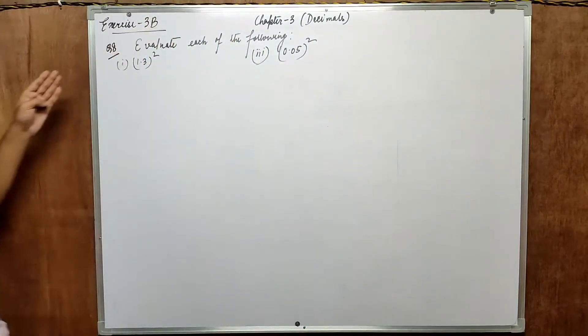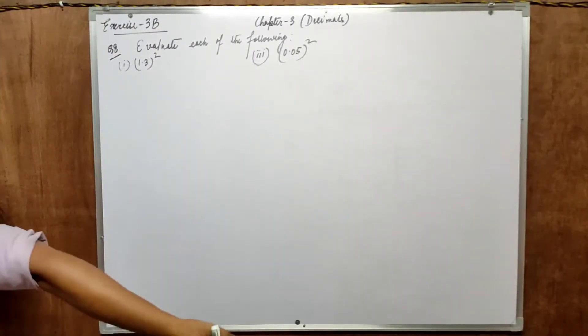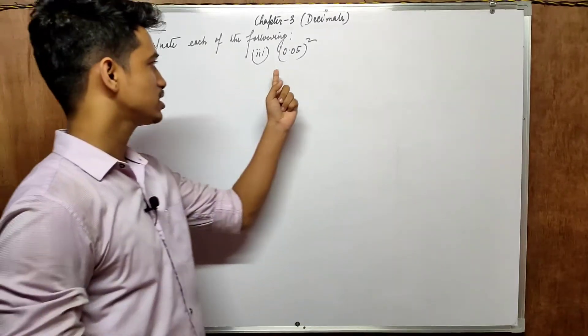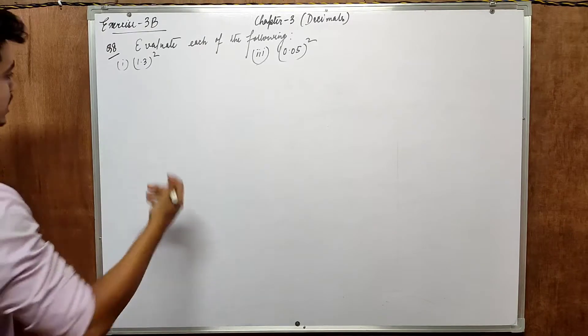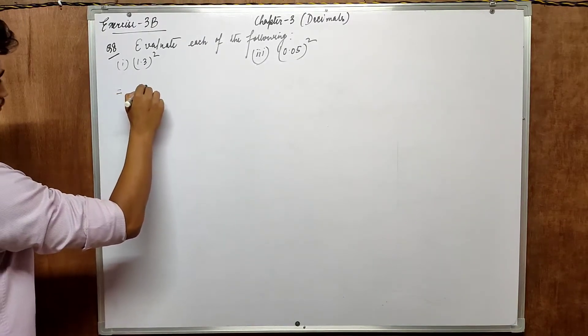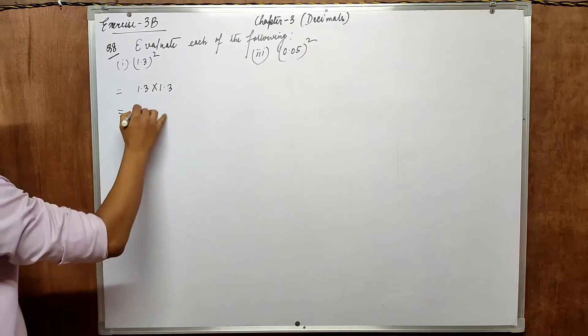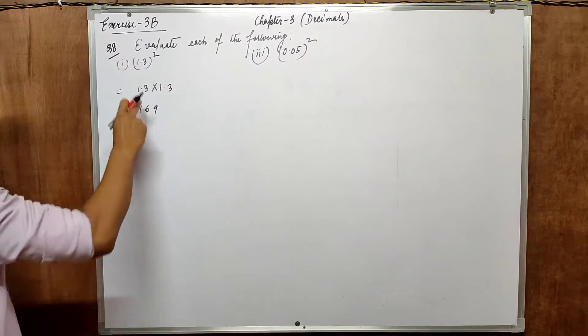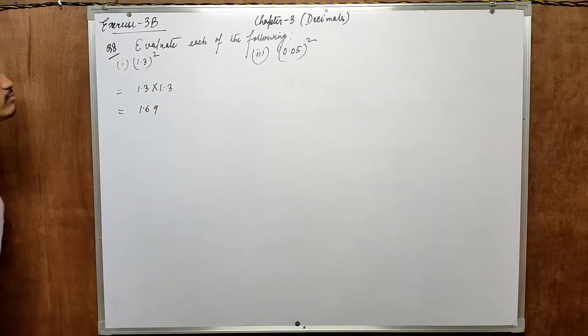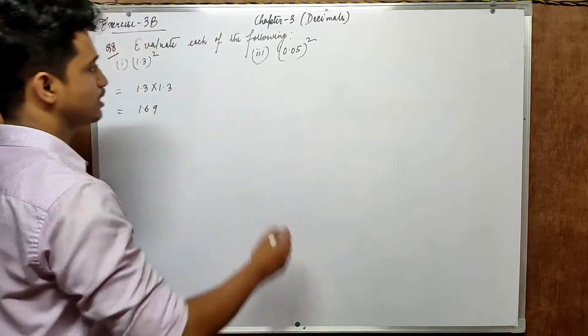Alright, let's start our journey by looking at question number 8. Evaluate each of the following. What is the first question? That is 1.3 whole square. Square means the repetition of number twice. So we know 13 into 13 is 169. And what is the process? After point, how many digits are there? 1 and 2. So that means 1.69 will be the answer. As simple as that.